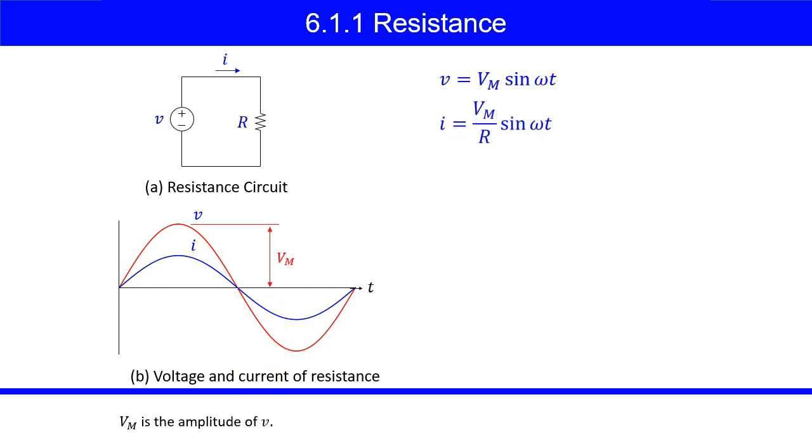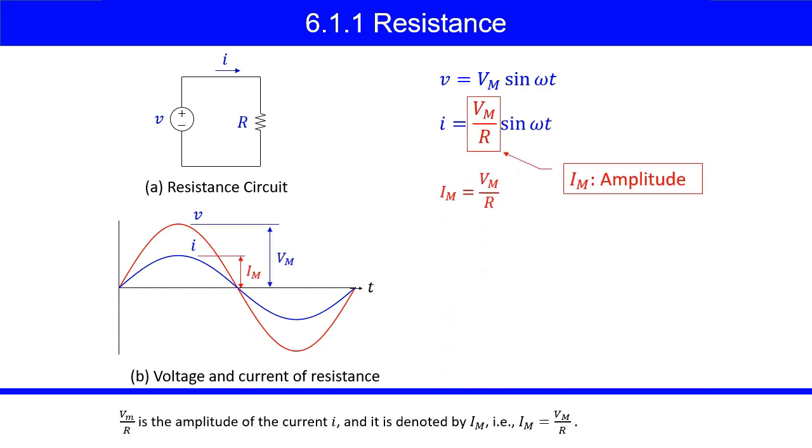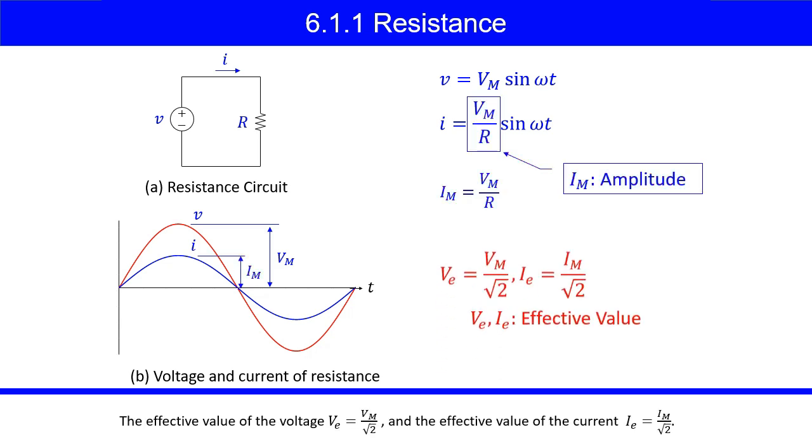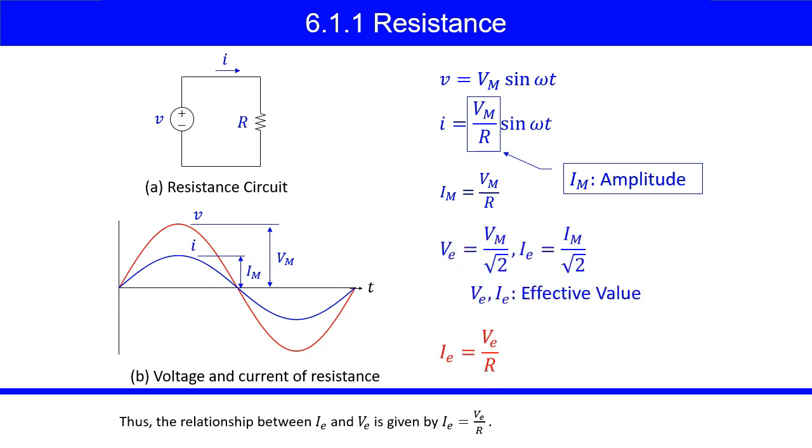Vm is the amplitude of V. Vm over R is the amplitude of the current I, and it is denoted by Im, that is Im equals Vm over R. The effective value of the voltage VE equals Vm over square root 2, and the effective value of the current IE equals Im over square root 2. Thus, the relationship between IE and VE is given by IE equals VE over R.